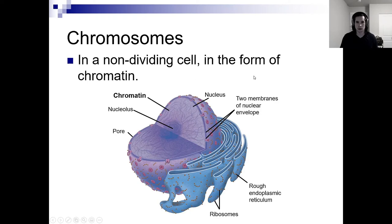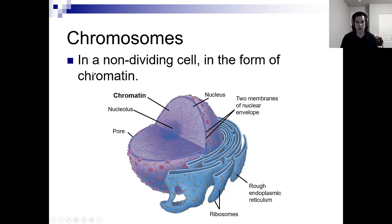Chromosomes are your genetic material in the form of DNA. In a non-dividing cell, they're going to be in the form of chromatin — kind of like decondensed, detangled spaghetti that's easily used for gene expression.